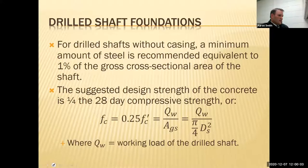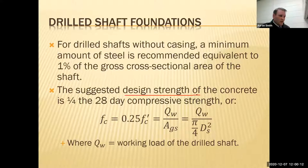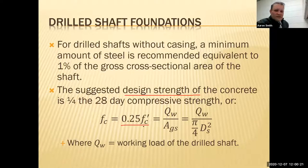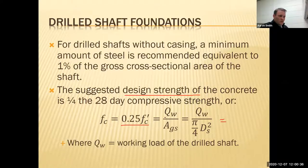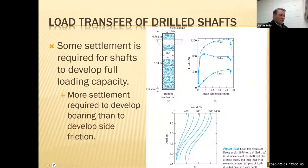For drilled shaft design, the design strength of your concrete — say 4,000 psi — is typically reduced to about a quarter of that value. There are equations to figure out the required concrete strength based on your working load and the area of your drilled shaft, so there are a couple of equations to help you design your drilled shafts.